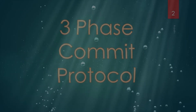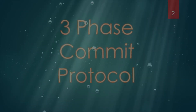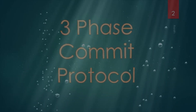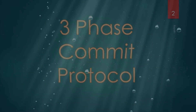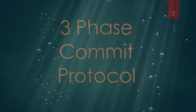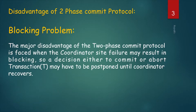So why will we learn the 3-phase commit protocol? Because the 2-phase commit protocol is a blocking protocol. If the coordinator fails permanently, some participants will never resolve their transactions. The major disadvantage of the 2-phase commit protocol is that coordinator site failure may result in blocking.